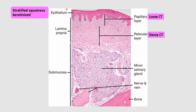Under the microscope, we can see the lining epithelium — stratified squamous keratinized epithelium. The lamina propria consists of a superficial papillary layer of loose connective tissue and a deep reticular layer made up of dense connective tissue. The deepest layer, the submucous layer, consists of minor salivary glands, nerves, and veins, and this submucosa rests upon the bone.